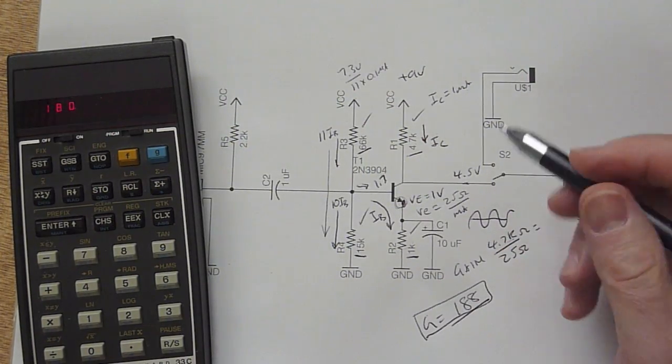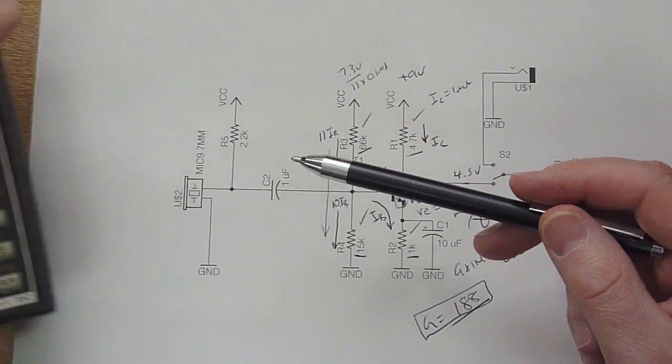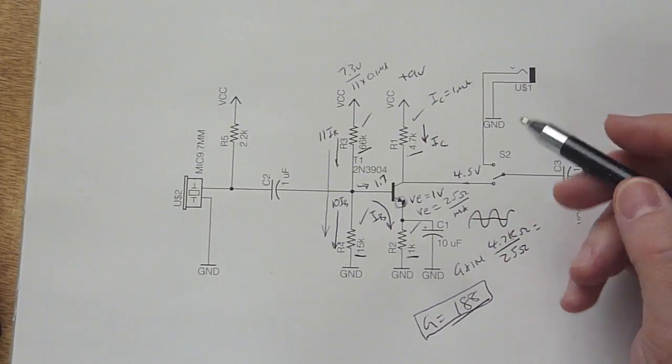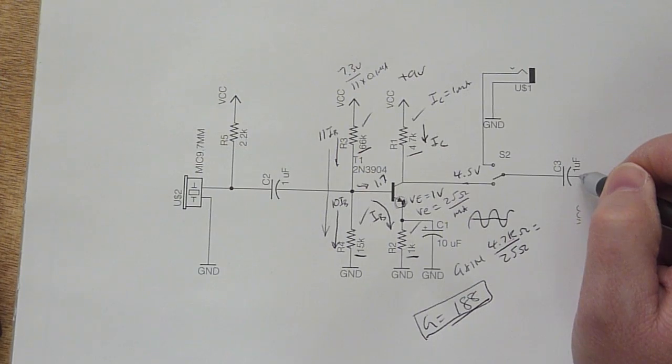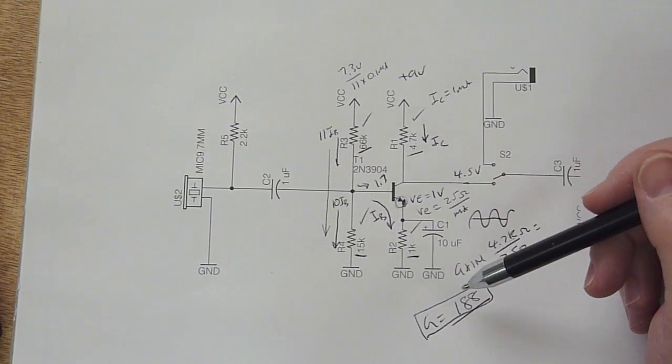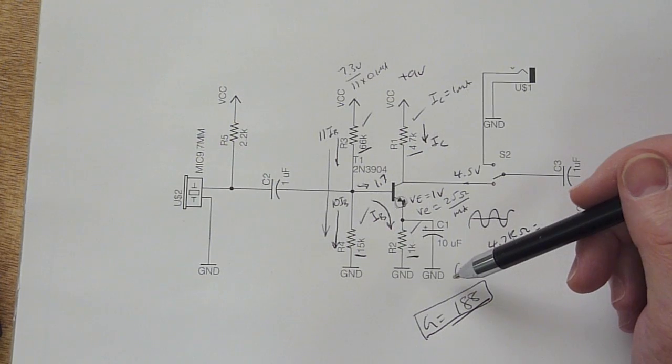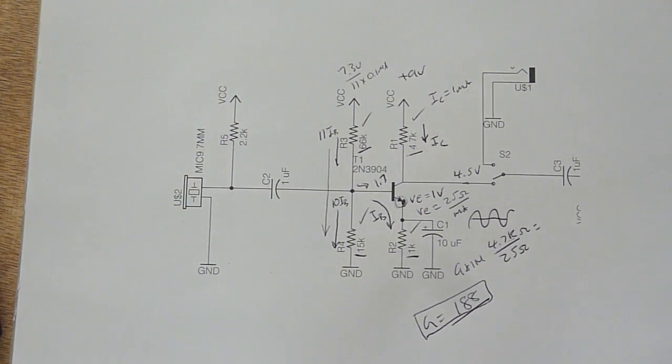And so that's almost 200, and that's pretty good to amplify the small signal from the microphone up into a reasonable level that will then go and drive our LED current driver. So anyway, that's how you design a common emitter amplifier. It's pretty straightforward. Okay, that's all for today.